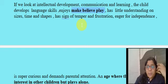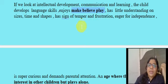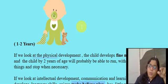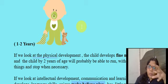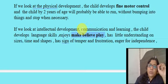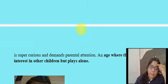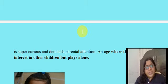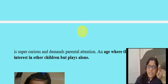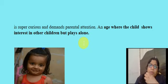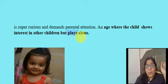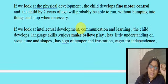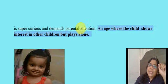There is a lot of frustration and temper; they are eager for independence. This is an age where children want to be independent — they don't like you to hold their hand. They want to walk like you and talk like you. They are very curious and interested in everything. One to two years is the age where the child shows interest in other children but plays alone.